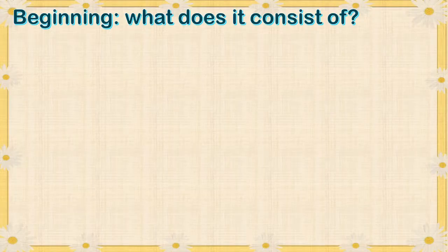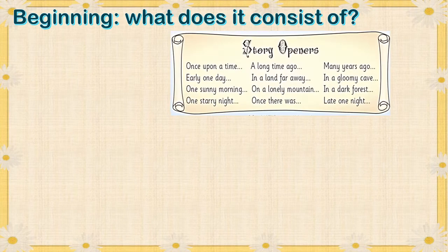Let's have a look at the features of the beginning of a story. The most important thing is that you have to start with a story opening sentence or line. The most classic one we all know is 'once upon a time.' There are a few examples of opening lines you can use: it could be 'many years ago,' 'early one day,' 'one sunny morning,' 'once there was,' or your story can start in the setting immediately.